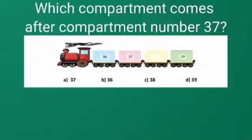Now let's solve our question number 2. Which compartment comes after compartment number 37? A number is written in every compartment. Let's read these numbers. Number written in first compartment is 36. Number written in compartment second is 37.